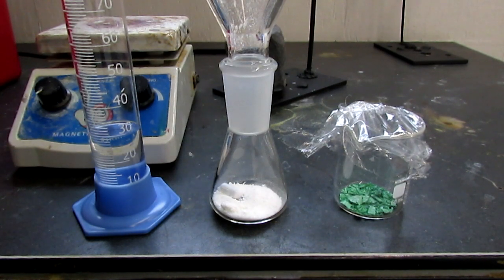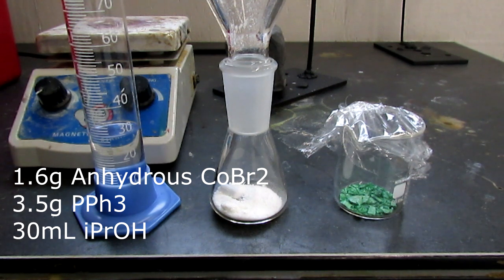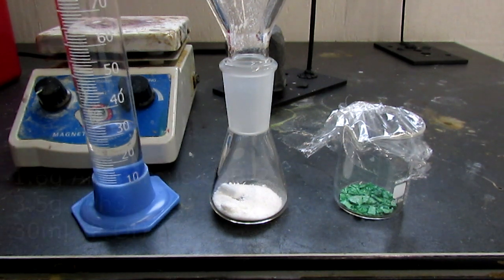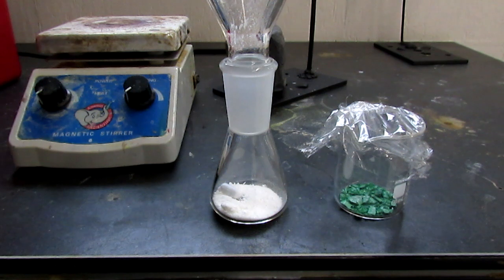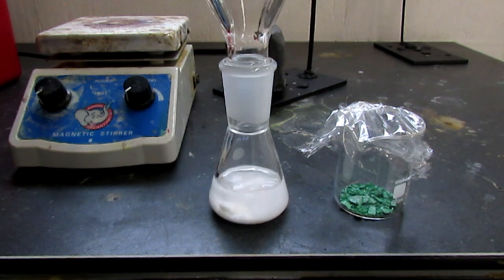Now we're going to make the bis(triphenylphosphine) cobalt bromide complex. Like before, we have 30 mL of isopropanol. This time we have 3.5 grams of triphenylphosphine and 1.6 grams of cobalt bromide. So let's get this dissolving and refluxing, and then we'll add the cobalt bromide to it.